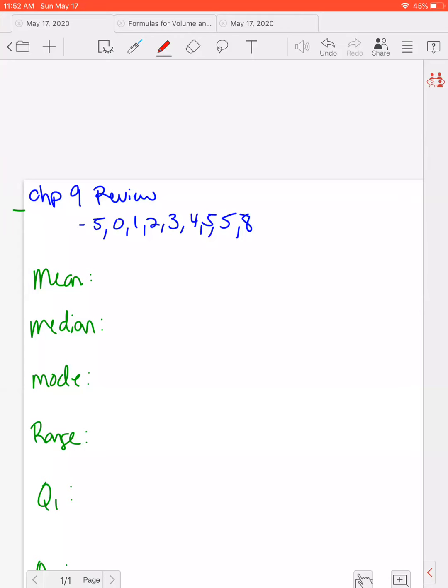Hi guys, welcome back. This is the review for chapter 9, which is all of our statistical data. So we have a set of data here: negative 5, 0, 1, 2, 3, 4, 5, 5, and 8. I just totally randomly made up these numbers.